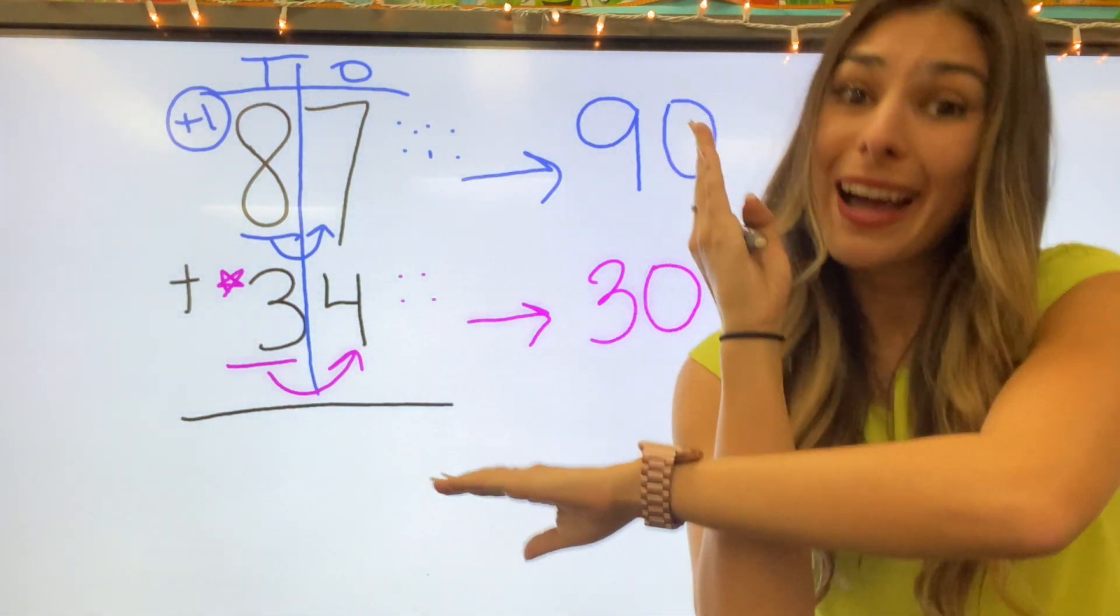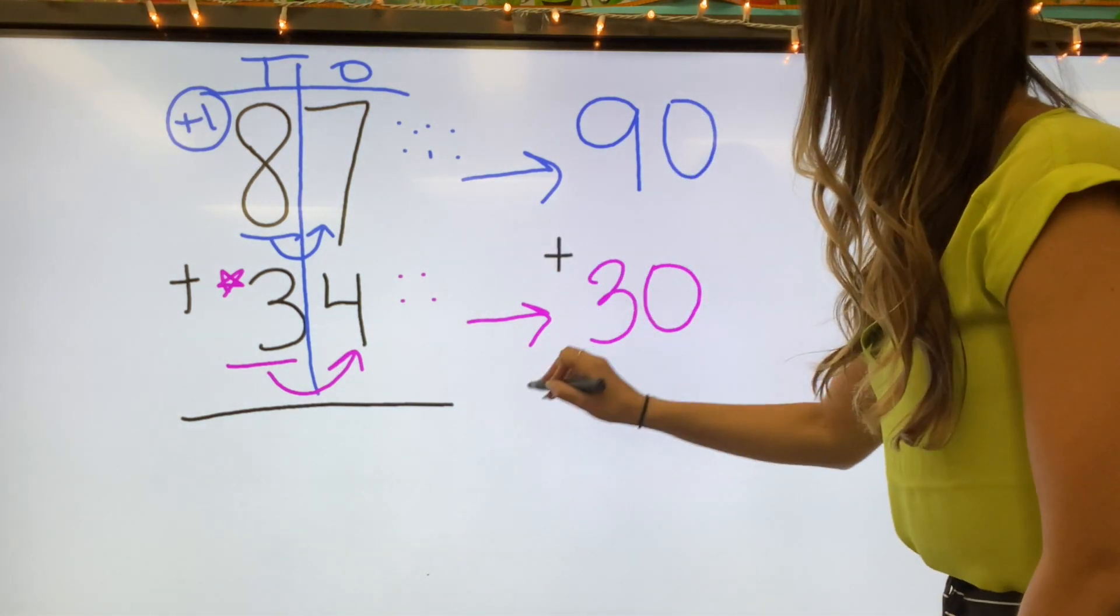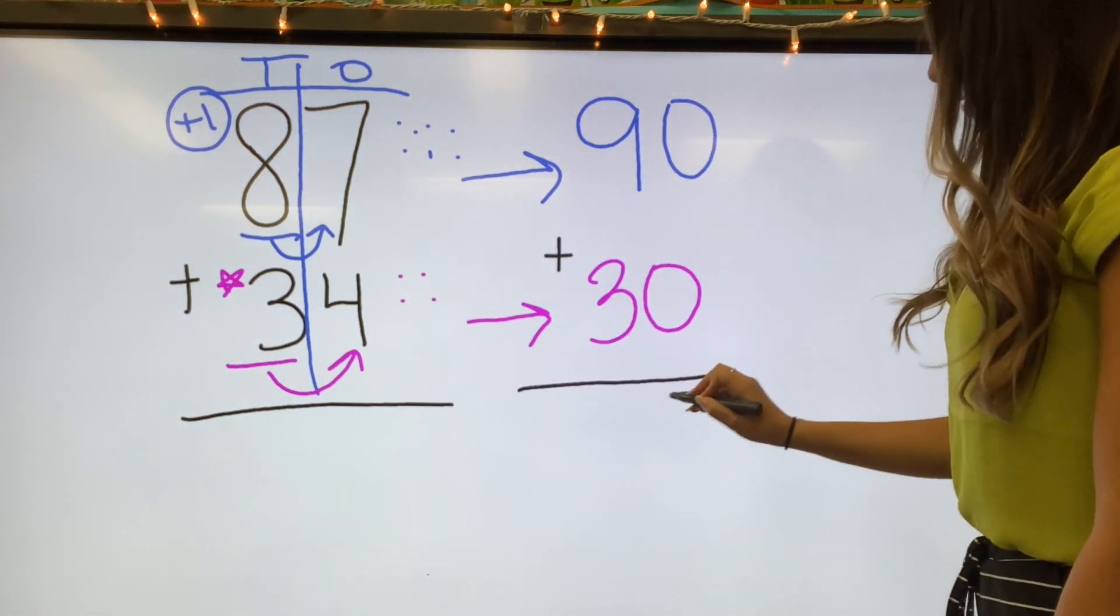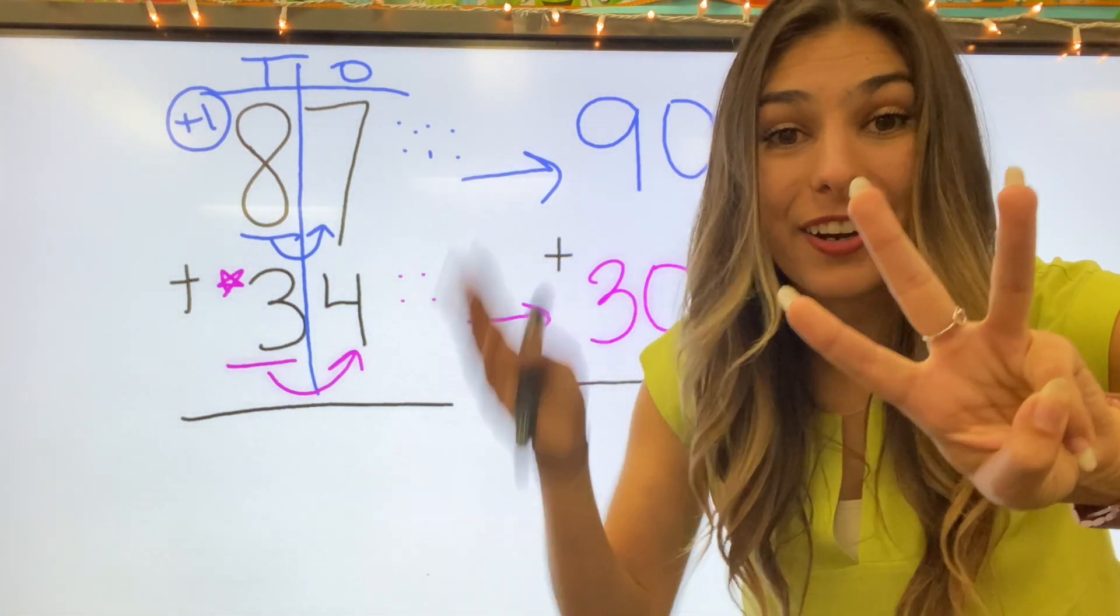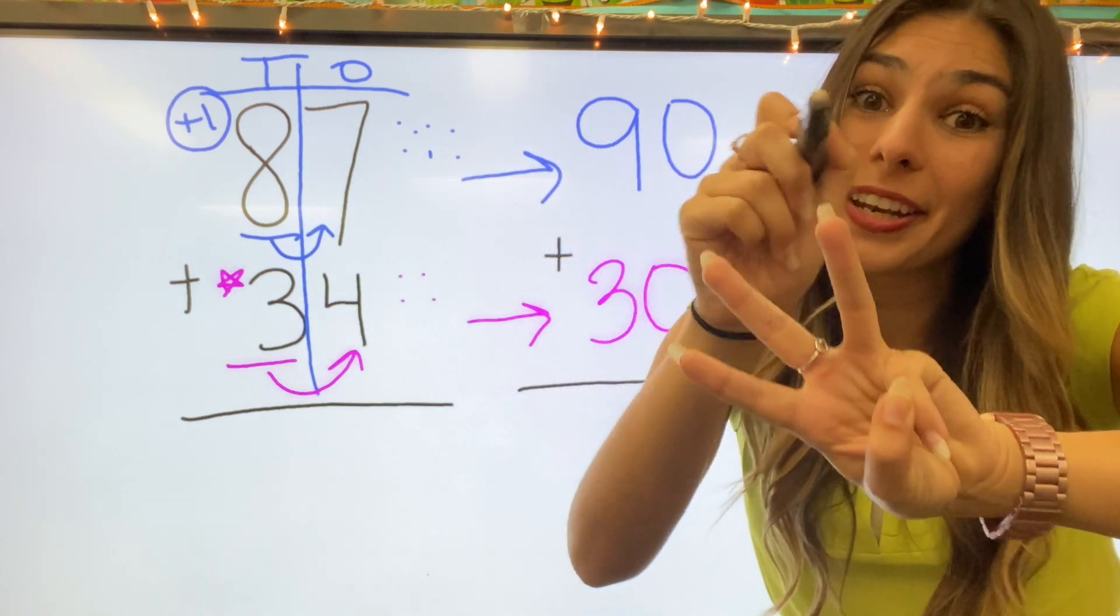So now that I've rounded both numbers, I'm ready to add. Zero plus zero equals zero. Nine plus three. I'm going to put nine in my head, three on my fingers. Nine, ten, eleven, twelve.